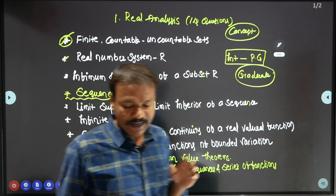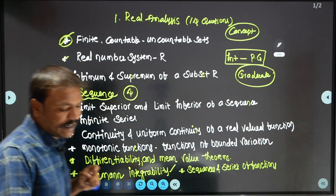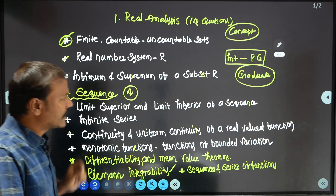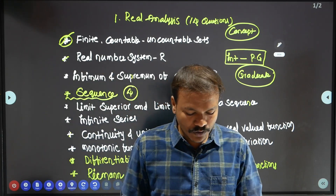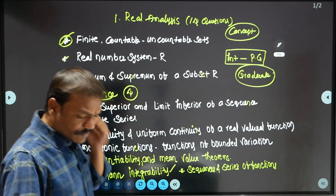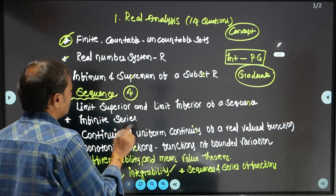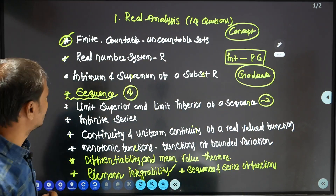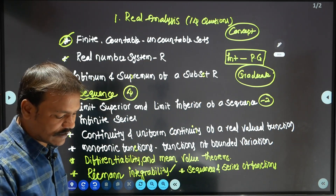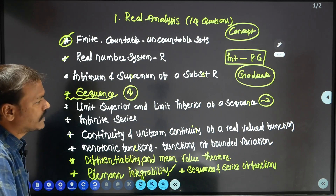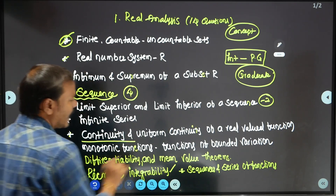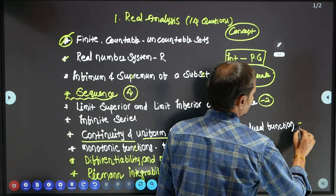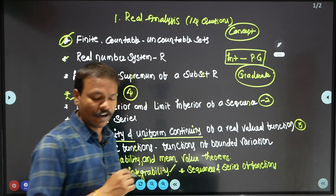Next, we have limit superior and limit inferior of sequences — approximately 2 to 3 questions from this topic. After that, continuity of functions: continuity and uniform continuity of real valued functions accounts for around 3 questions.